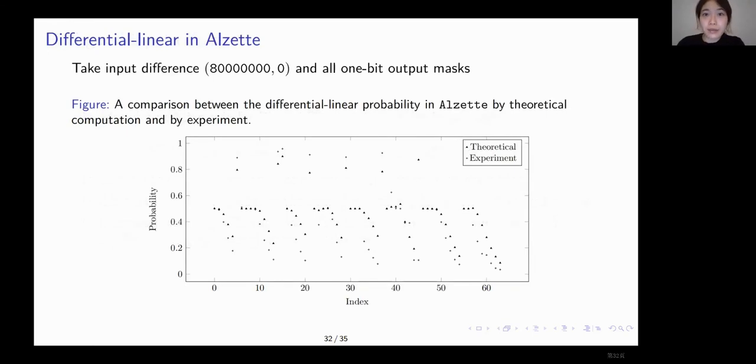For instance, here we have input difference, this one, in a differential linear setting. And the results are depicted in the following figure. The x-axis is the position of output difference from 0 to 63, and the y-axis is the probability. The statistics show basically the same pattern for theoretical evaluation and experiments.